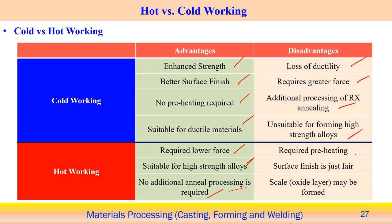Hot working disadvantages include required preheating and only fair surface finish — not as smooth as cold working — because deformation occurs at high temperature. Additionally, oxide layers may form due to the increased affinity to oxidation at high temperatures, potentially creating defects in the metal forming operation unless oxidation is prevented. These are the advantages and disadvantages associated with hot and cold working processes.